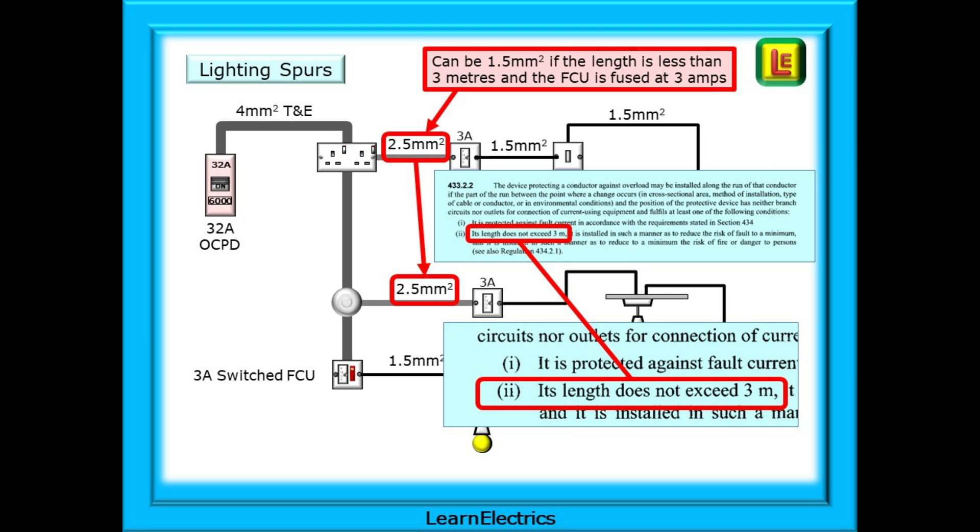Let's go back to the lighting spur that comes off the socket and the lighting spur taken from the junction box. We have 4-square-millimeter cable on the radial trunk, 2.5 between the socket and the FCU, and then 1.5 after the FCU. Three different sizes of cable. This is because the cable should always be an appropriate size at each point on the circuit. Except that there is a regulation that allows us a little leeway. Regulation 433.2.2 tells us that if the 2.5-square-millimeter cable going from the socket to the FCU is less than 3 meters in length, then it can be just 1.5-square-millimeter in size. But there must be no branches in the cable and no outlets of any kind. Just a simple piece of cable from the socket or junction box to the 3-amp FCU and not more than 3 meters in length.